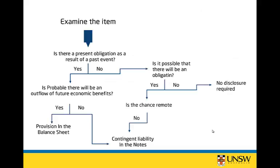Examining this item — it's a lawsuit. Is it a present obligation from past events? Yes: it was a violation of the patent which occurred in the past, which is what the lawsuit is about. Is it probable there will be an outflow of future economic benefits? No — the legal team believes it's unlikely that damages will be awarded. If the answer were yes, it would be a provision in the balance sheet. But since it's less than 50% probable, it remains a contingent liability disclosed in the notes.